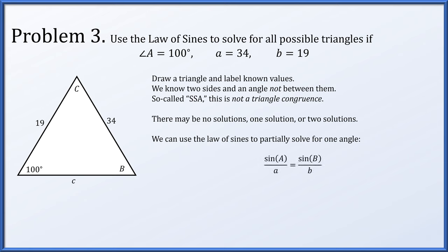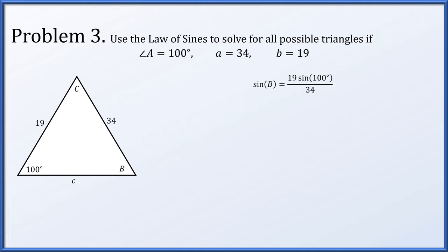The sine of A over a must equal the sine of B over b. A is 100 degrees, little a is 34, and little b is 19. This allows us to solve that while I do not know angle B, I know its sine has to be 19 sine 100 degrees over 34. Having solved that, we don't know angle B, but we know its sine has to be a particular value, so we could just take an arcsine.